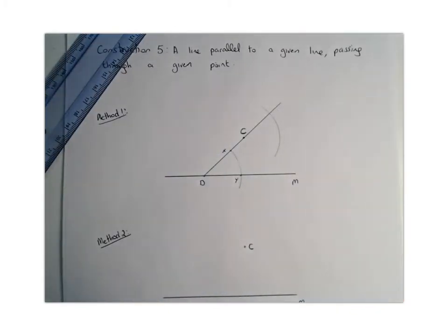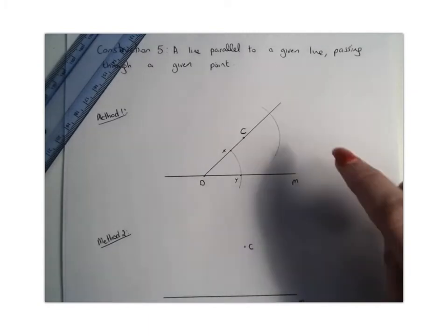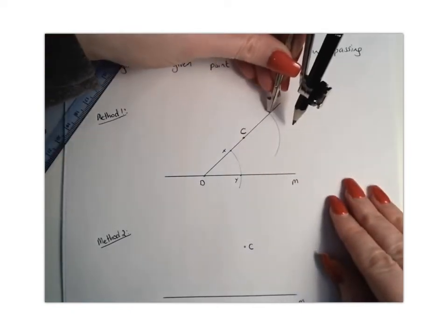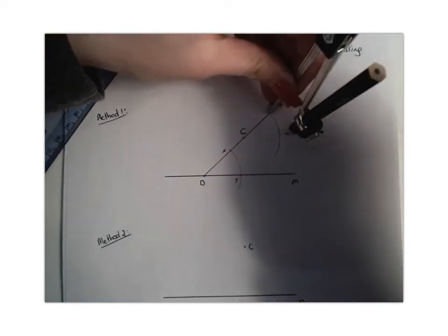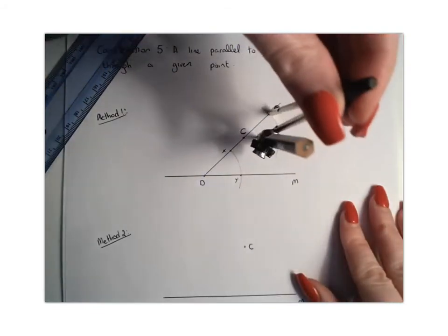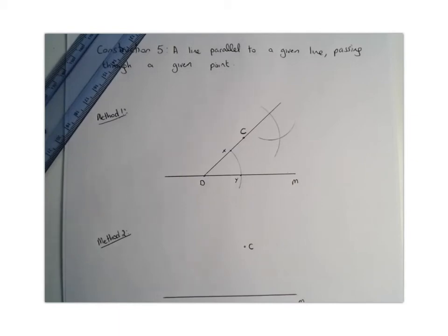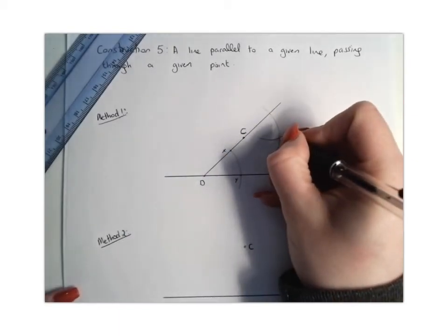And then I'm going to place the compass point where the upper arc, which is this one, meets the line that we drew. And I'm going to place my compass down here, and I'm going to draw an arc. So where those points intersect, we're going to mark like so.